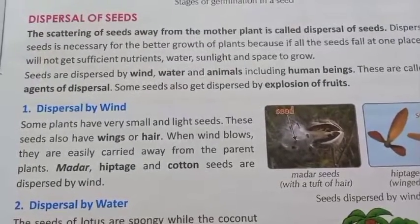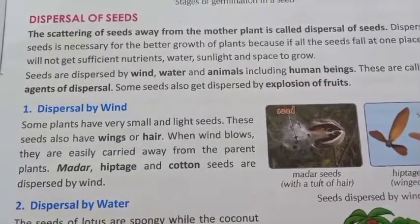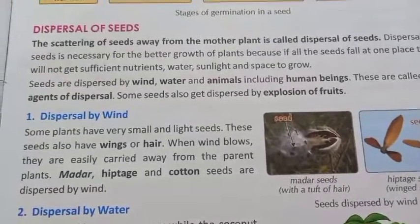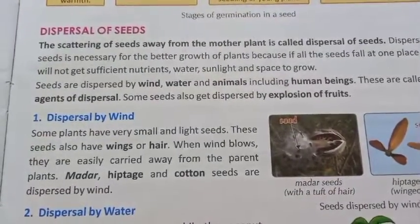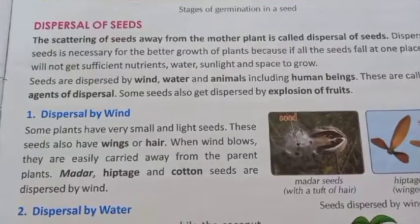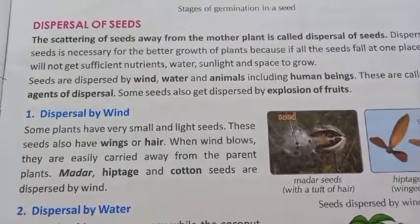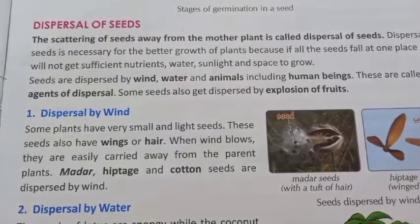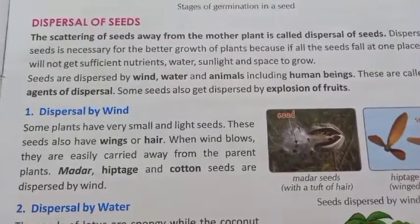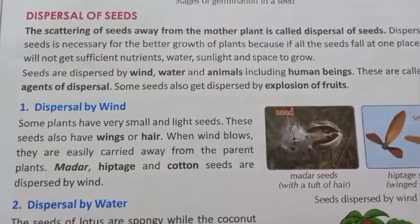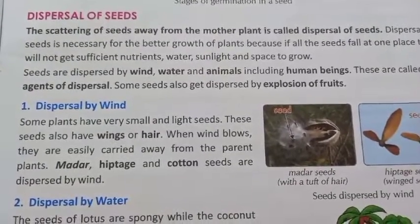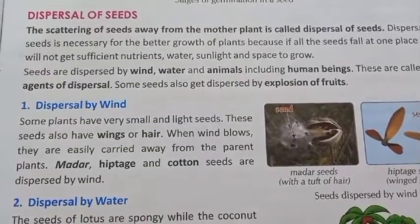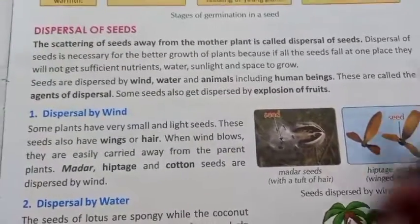So the process in which seeds are scattered far away from the parent plant to obtain suitable conditions for germination is called dispersal of seeds. In nature, seed dispersal is carried out by wind, water, and animals. These are called agents of seed dispersal.